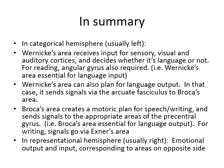In summary, language areas of the brain are usually on the left side. Wernicke's area receives and interprets input as language — and with the angular gyrus it also enables reading. Wernicke's area also plans language output and how grammar fits in, then sends that output via the arcuate fasciculus to Broca's area. Broca's area has a role in grammar planning and syntax, then creates a motor plan for speech and writing and sends signals to the appropriate areas of the precentral gyrus. On the opposite side of the brain, the representational hemisphere controls the emotional input and output of language.